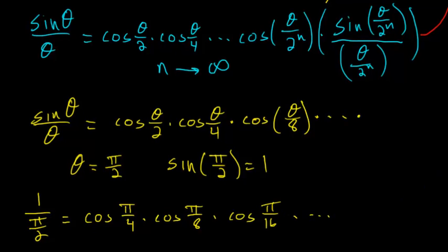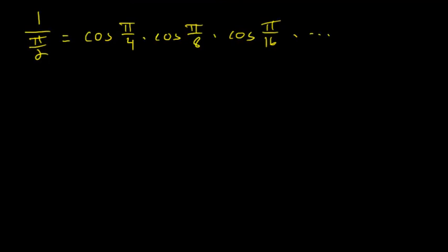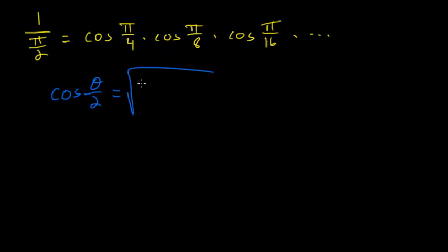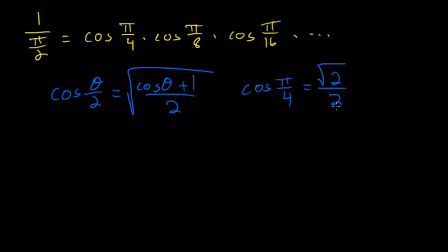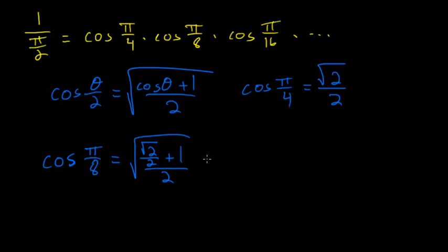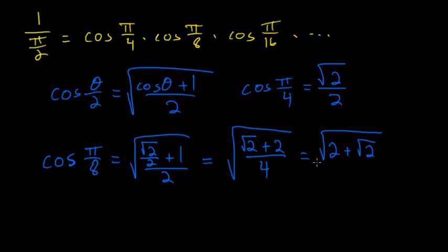To evaluate all of these cosines, we use the half-angle identity derived previously: the cosine of theta over 2 equals the square root of the quantity cosine of theta plus 1, all divided by 2. The cosine of pi over 4 is the well-known value square root of 2 over 2. Using the half-angle identity, the cosine of pi over 8 equals the square root of the quantity square root of 2 over 2, plus 1, divided by 2, which simplifies to the square root of 2 plus the square root of 2, all divided by 2.